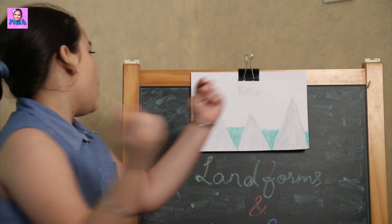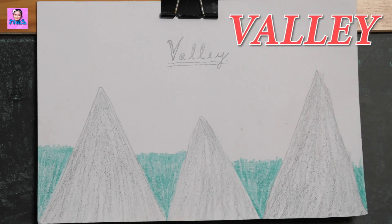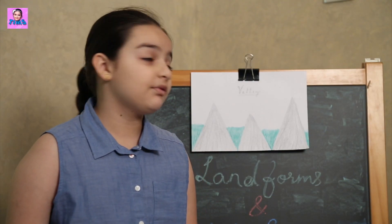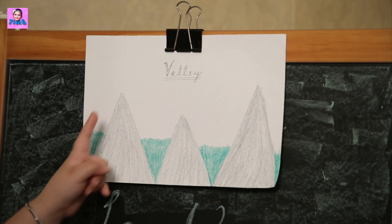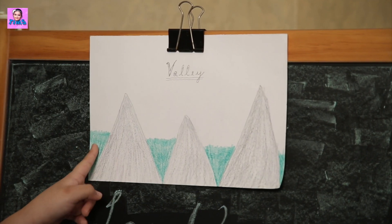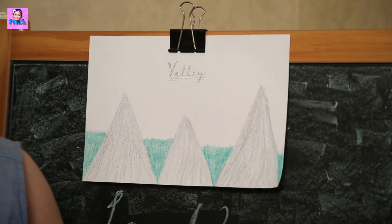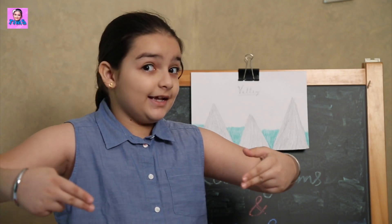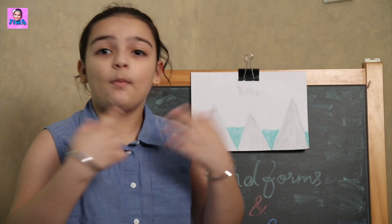In landforms, the first one will be Valley! A valley is a low land between hills or mountains. As you can see, these are hills and the green bit is the valley in between hills or mountains.